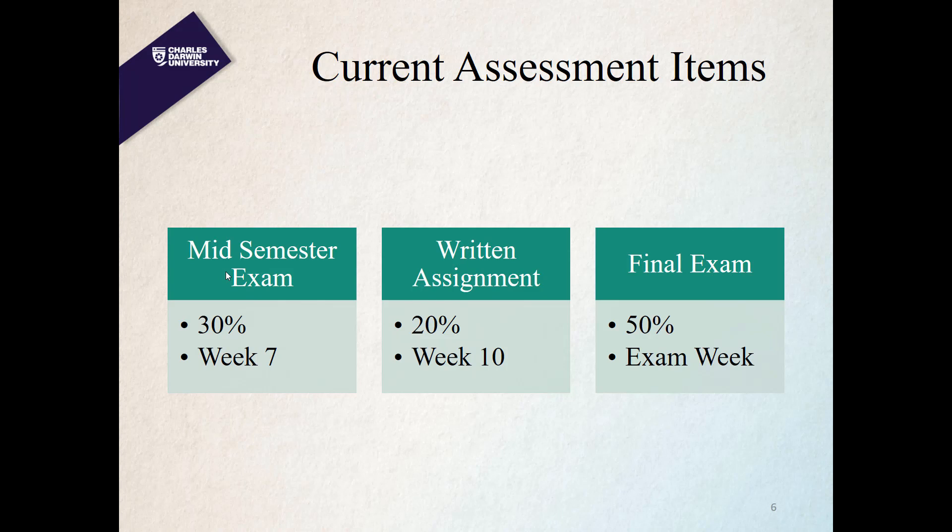At this moment, ACT 102 has a mid-semester exam worth 30% held in week 7, a written assignment worth 20% due in week 10, and a final exam worth 50% held in the exam period. These are the current assessment items: 30%, 20%, and 50%, timed at week 7, week 10, and the exam period.